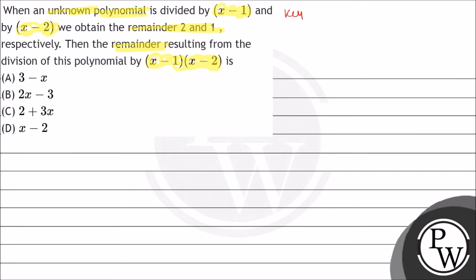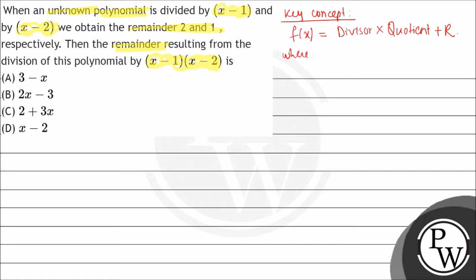The key concept for this question is the quotient-divisor-remainder relation. So f of x can be defined as divisor times quotient plus remainder r, where r is the remainder. We are going to use this key concept to solve this question.